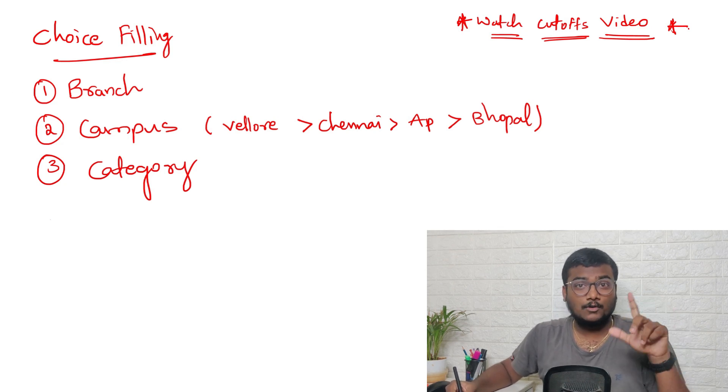Once you fill the choices you can't change them. Once any branch is allotted you can't change any branch, campus, or category. You should keep all these things in mind before you fill and finalize the choices before tomorrow 5pm. These are the three things: branch, campus, and category.